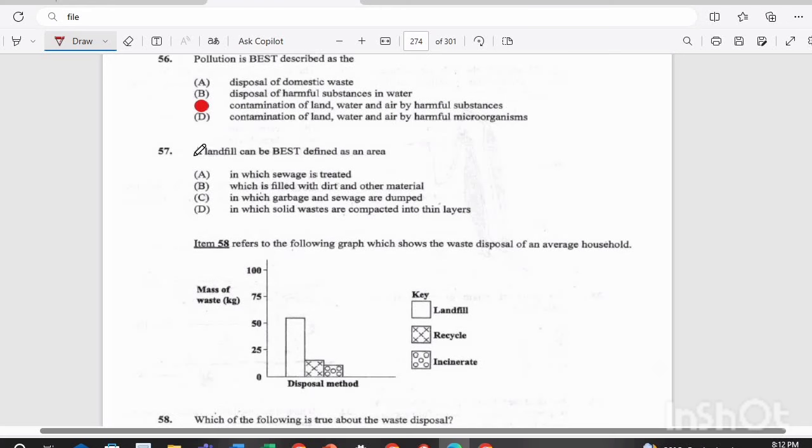Question 57. A landfill can be best defined as an area A. In which sewage is treated, B. Which is filled with dirt and other material, C. In which garbage and sewage are dumped, or D. In which solid waste are compacted into thin layers. And the answer there is D. That is a landfill.